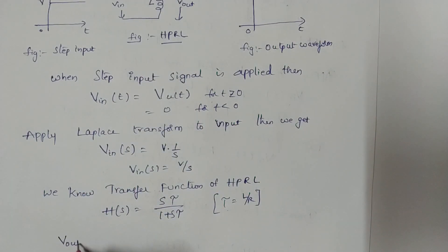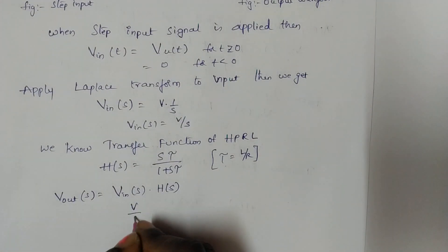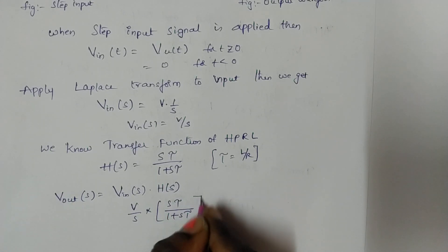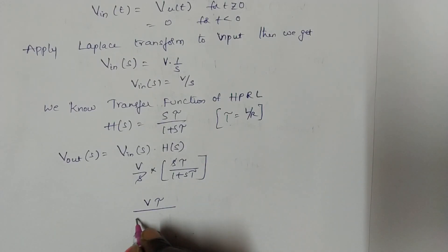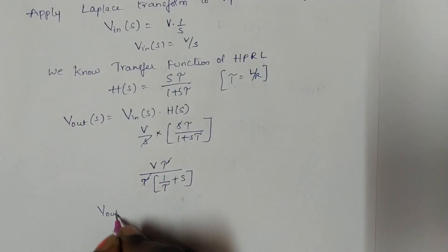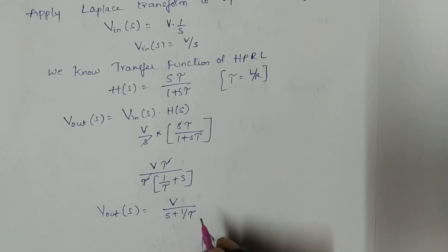Now, V_output(s) = V_input(s) · H(s). Substituting: V_output(s) = (V/s) · (sτ / (1 + sτ)). The s terms cancel, giving V·τ in the numerator. Taking τ as common in the denominator gives τ·(1/τ + s), and τ cancels. So V_output(s) = V / (s + 1/τ), which is in the standard 1/(s + a) form.